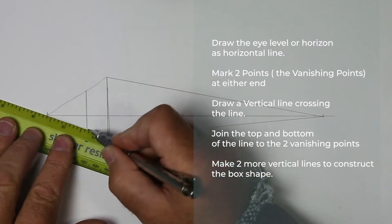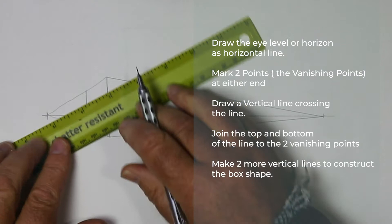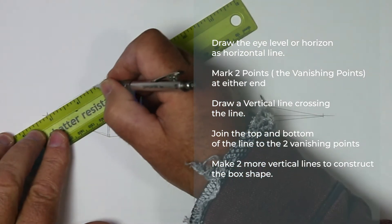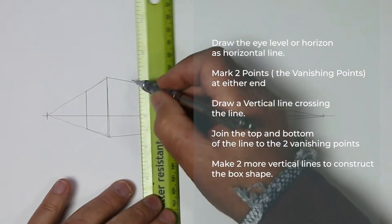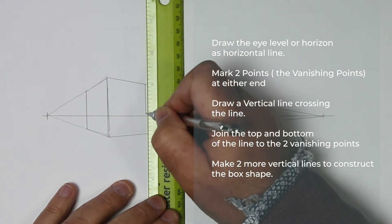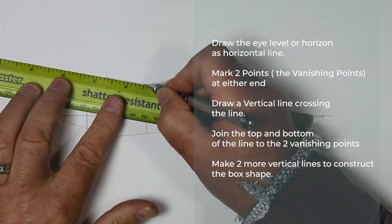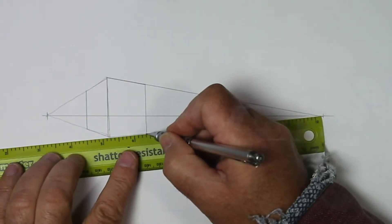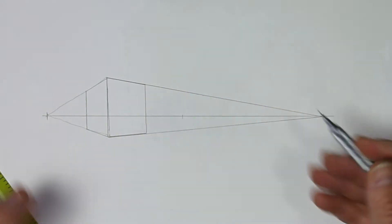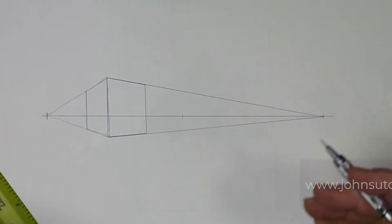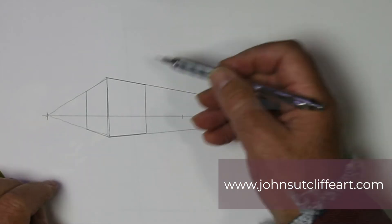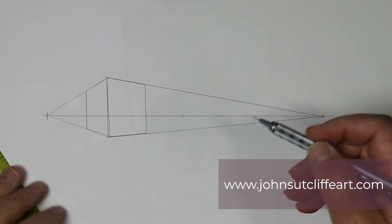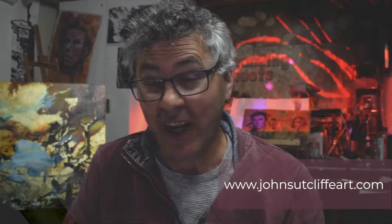Put the ruler on the vanishing point and join that up to the top and the bottom, and do that at both points, then drop a vertical line at some other point. That shape there becomes an object we're looking at — where our horizon sits within the building depends on whether we're looking down on it or it's above us. We're going to draw a simple street scene.